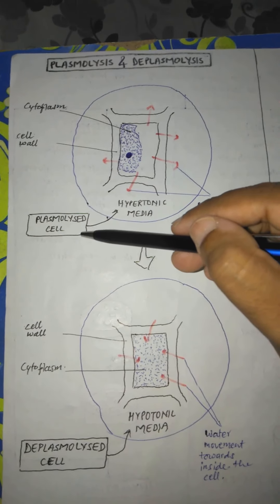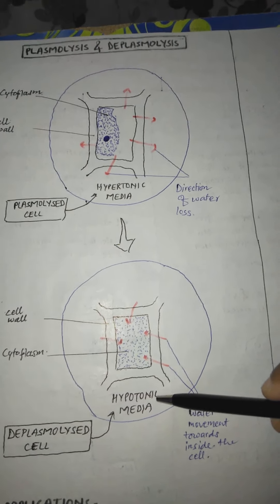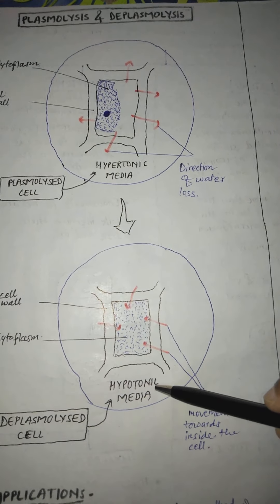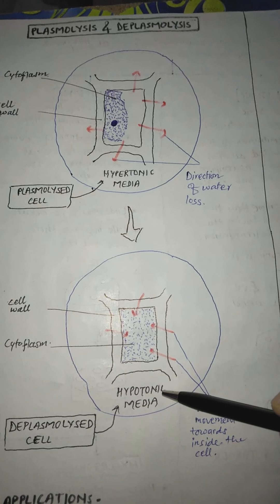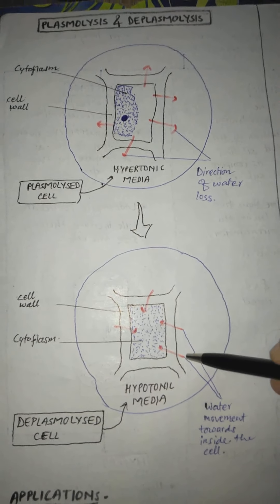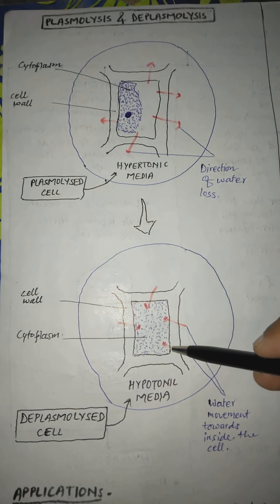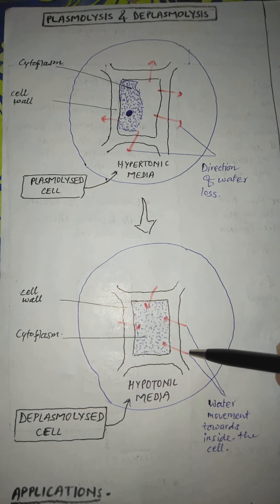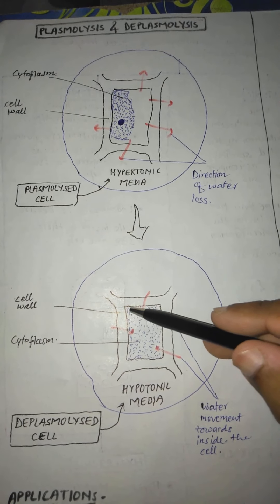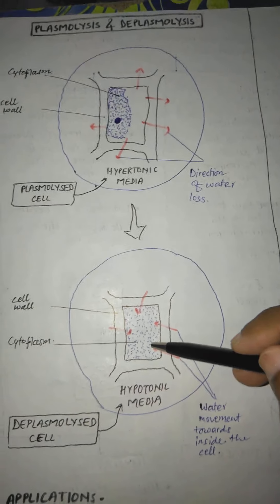Next, when this plasmolyzed cell is placed into a hypotonic medium — hypotonic medium being a kind of solution which consists of less concentration as compared to the concentration of cell sap — the water molecules mainly present in the hypotonic medium move towards the inside direction of the particular cells, from outside to inside.